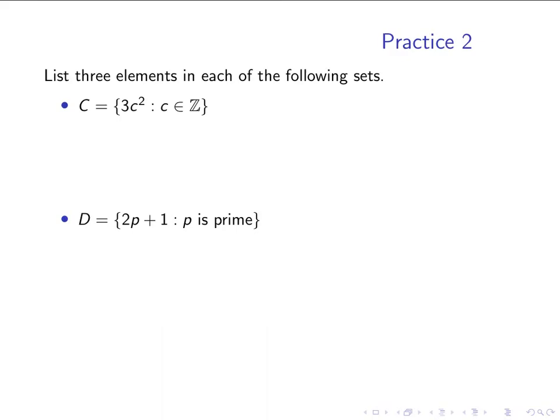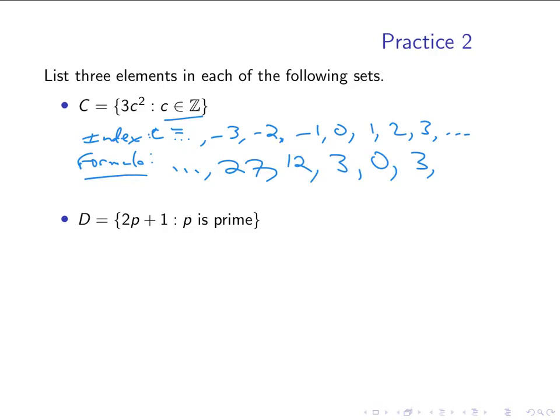To practice using the form description of a set, we have a few problems here. And, again, the idea is to write down numbers from our index set. Our index set here is the set of all integers. So, I'll include negative ones and positive ones. And the formula applied to these values is doing 3 times c squared, where the c is the value above. So, 3 times negative 3 squared is 27. 3 times negative 2 squared is 12. 3 times negative 1 squared is 3. 3 times 0 squared. And then I'll get the same values again, because 1 squared is the same as negative 1 squared. And so on. And so, these are all values in the, these are all members of the set.